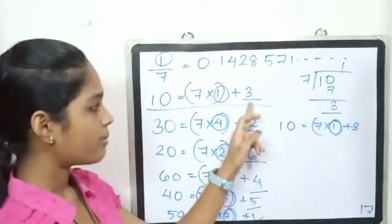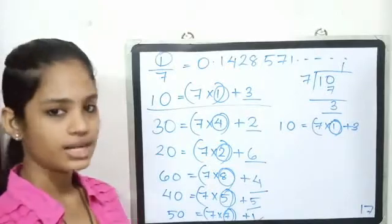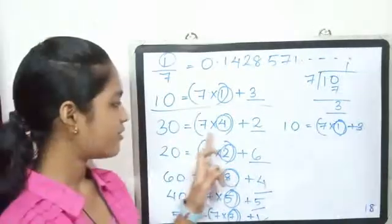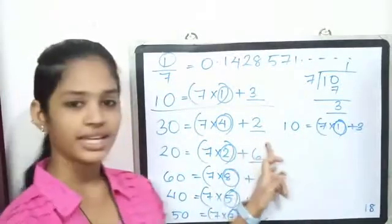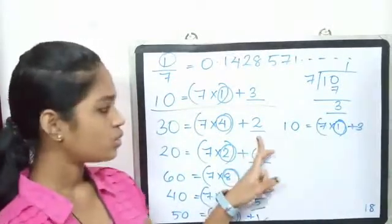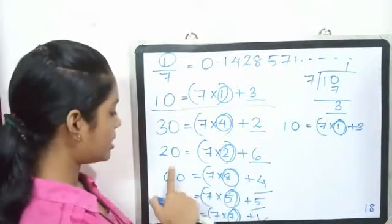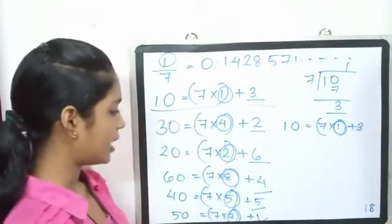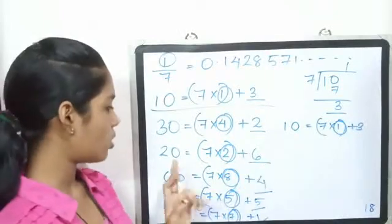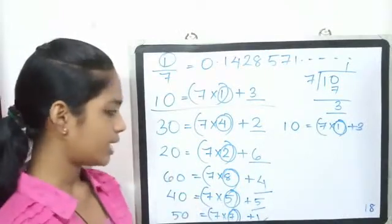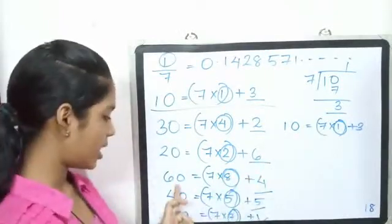Now, the reminder here is 3. 3 x 10 is 30. 7 x 4 is 28, plus 2 is 30. Now, the reminder here is 2. 2 x 10 is 20. 7 x 2 is 14, plus 6 is 20. Now, the reminder here is 6. 6 x 10 is 60.